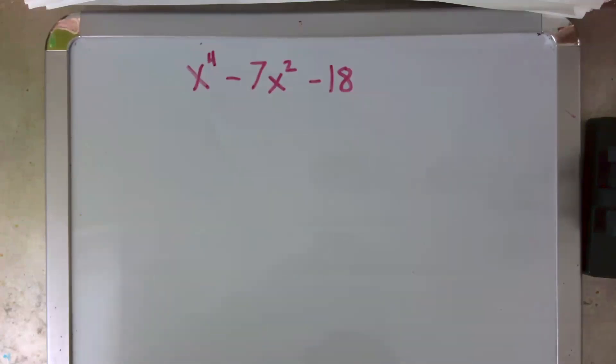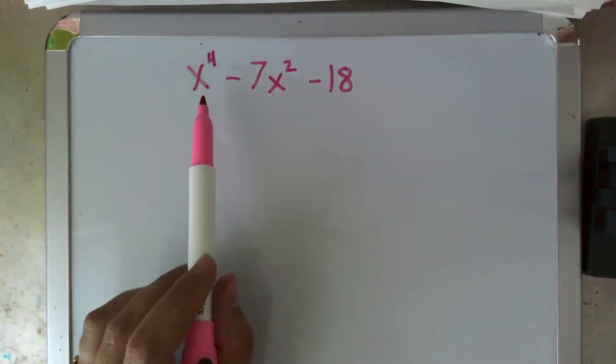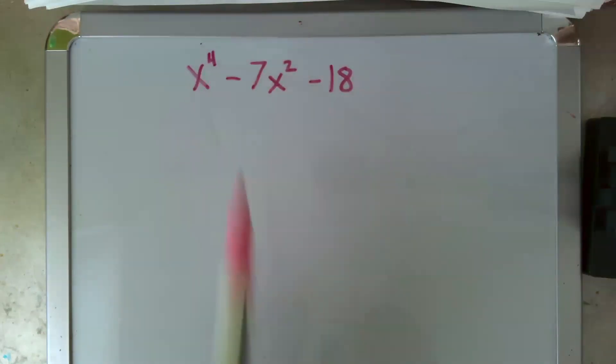Hey algebra fans, in the middle of every quadratic unit, there comes a time where you shift from a true quadratic, which means the leading term is no higher than 2, to things that sure do look like quadratics, but they start with things like x to the 4 or something else.